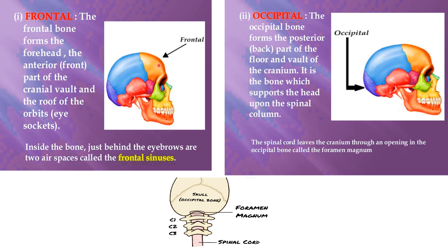The frontal bone forms the anterior part of the cranium wall and forms the roof of the eye socket. The occipital bone is present posteriorly and supports the brain. From the occipital bone there is an opening known as the foramen magnum through which the spinal cord passes.